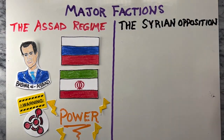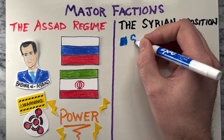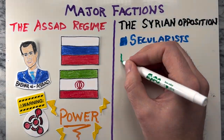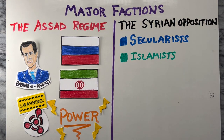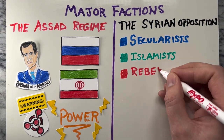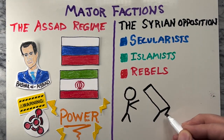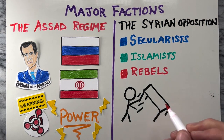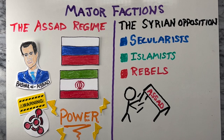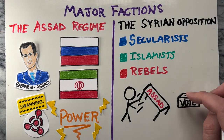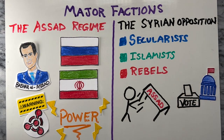Next is the Syrian Opposition, a loose coalition of anti-regime groups including secularists, Islamists, and moderate rebels. The opposition seeks to overthrow the Assad regime and establish a democratic government.